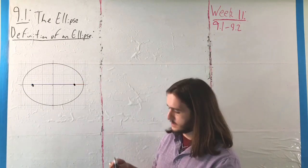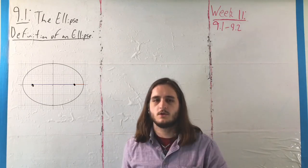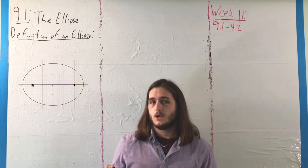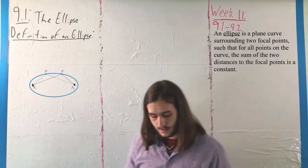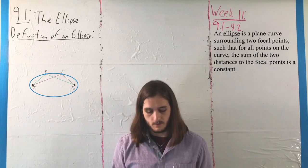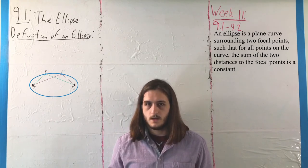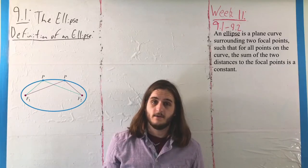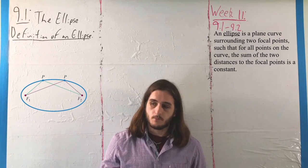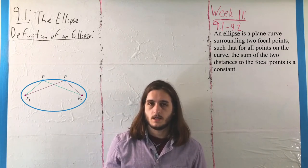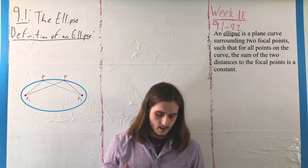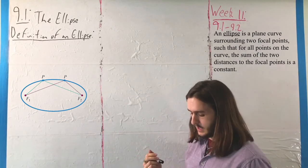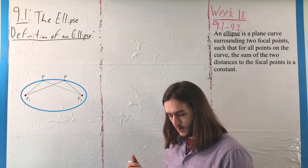If we take all of those points, we'll still get something roughly circular, but not quite as nice as a circle itself. Instead, we'll get a shape called an ellipse built around that type of location. Specifically, the definition of an ellipse is the set of all points p such that the sum of distances from two other points — which we call f1 and f2, our foci — is constant.